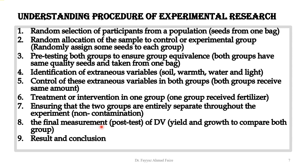The post-test gives us the value of the dependent variable, telling us whether the experiment was effective or not. After this final measurement, we compare the post-test results with the pre-test results to see if there is a difference — how we started before the experiment versus how we ended after. Any difference reflects the effect of introducing the independent variable, and this becomes our result and conclusion.